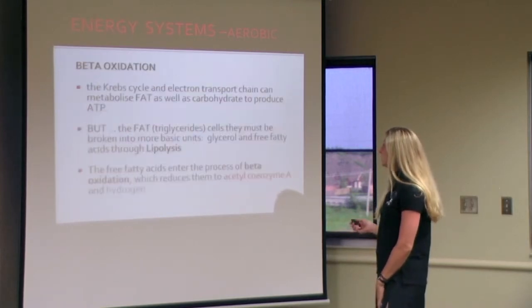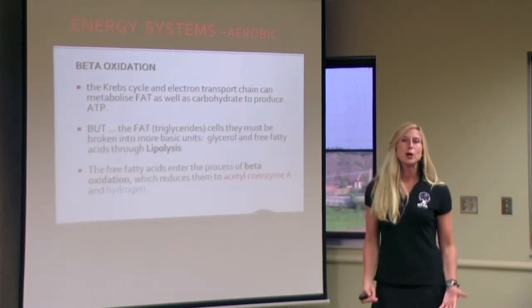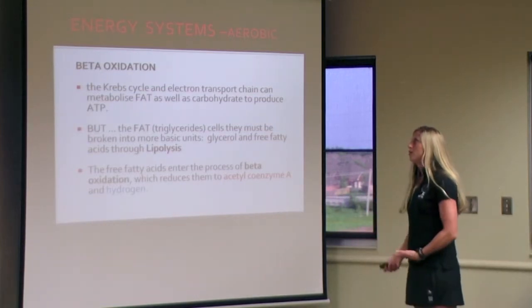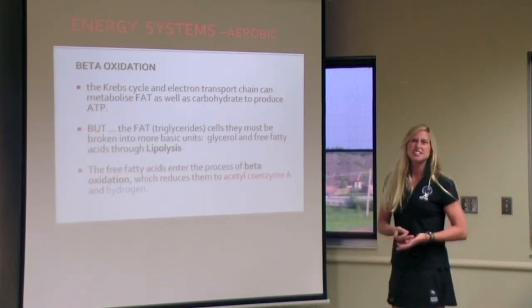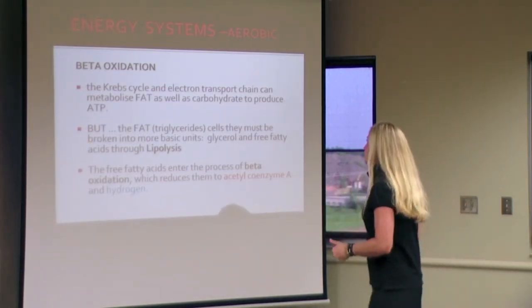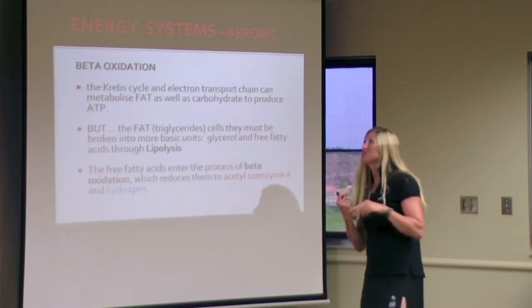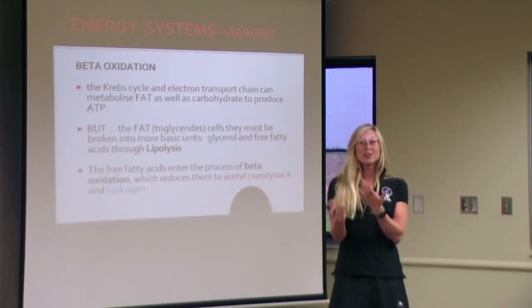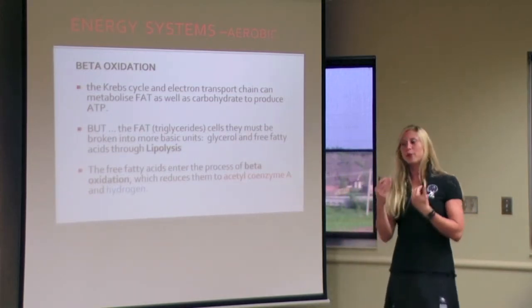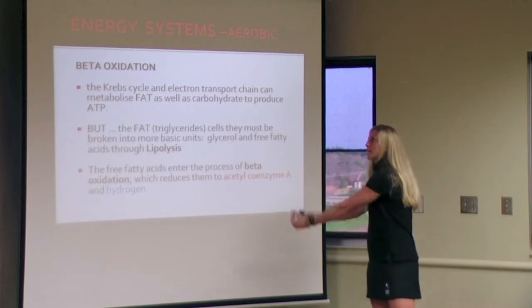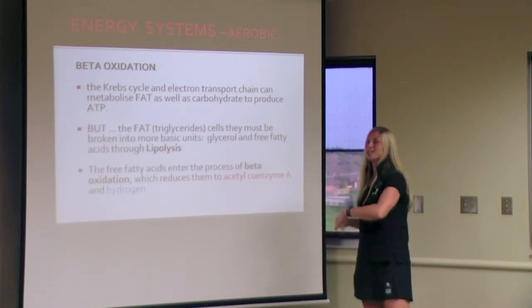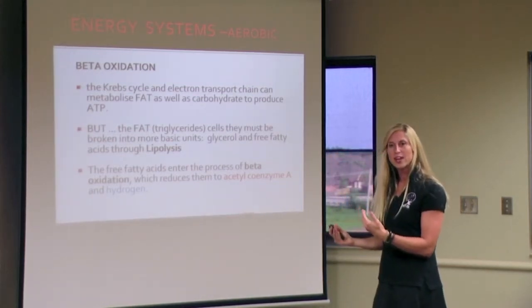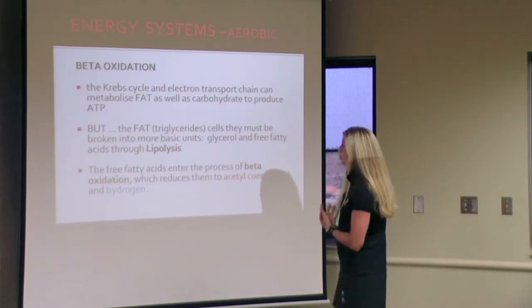Beta-oxidation is how our body metabolizes fat. Fat is a calorically dense, ATP-dense storage unit, but it's also very hard to break down. We can't do high-intensity work and burn fat all the time, but our body can burn fat when given the chance. That's why all of these other energy systems need to work properly so that beta-oxidation can keep up its end of the bargain.